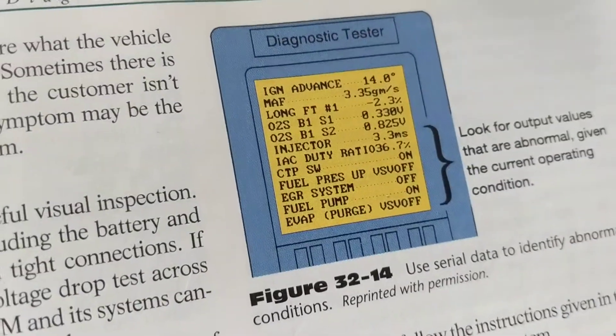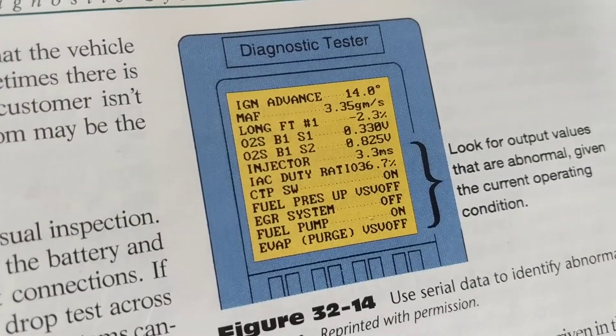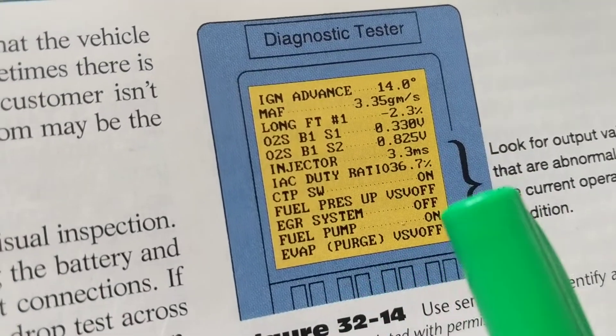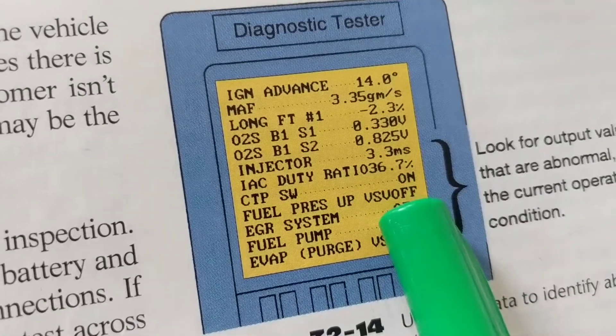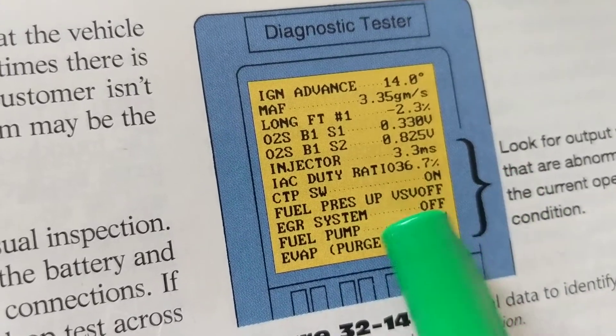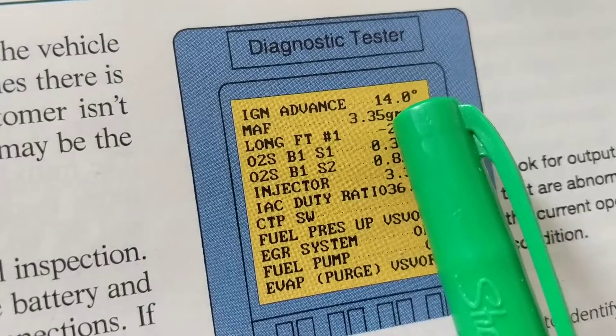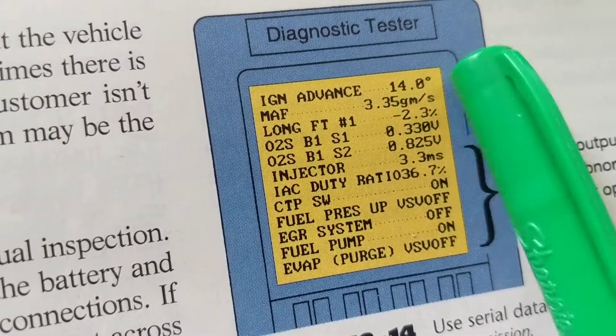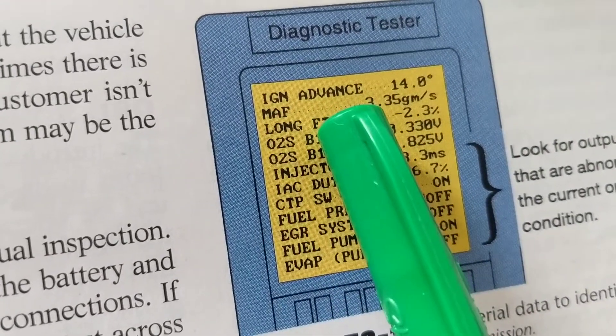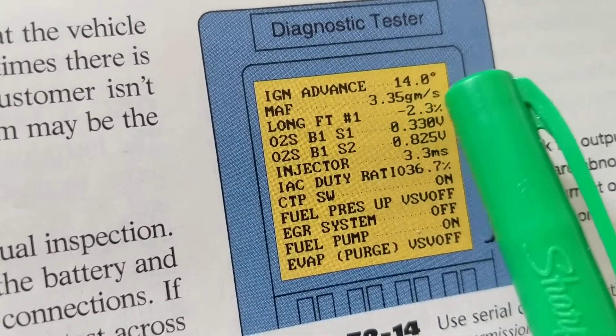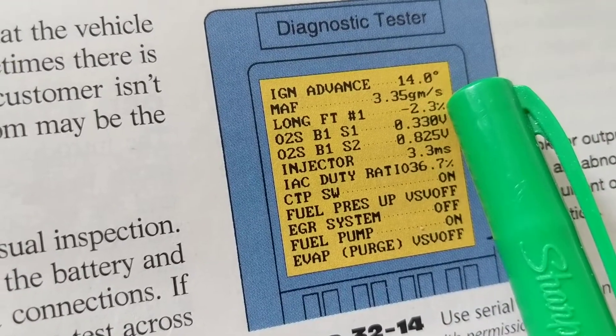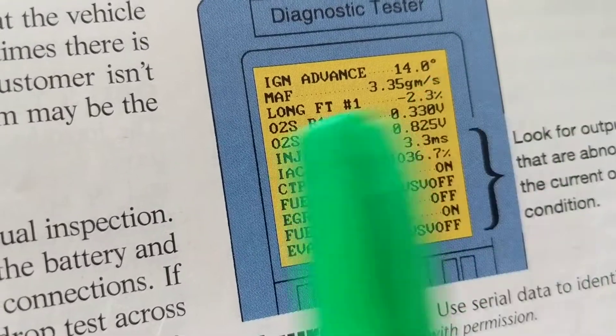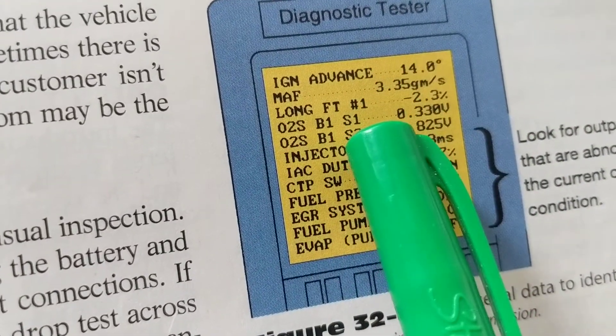When you put a scan tool on, it doesn't matter the type, it's going to give you information about sensors, things that are on and things that are off, motors, pumps. Let's say ignition advance, which is something related to the timing of the ignition: 14 degrees. Mass airflow sensor will tell you grams per second—that's what it means—how much air is going through the mass airflow sensor so it knows how to calculate fuel.